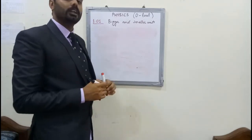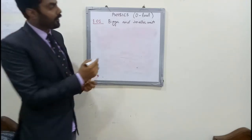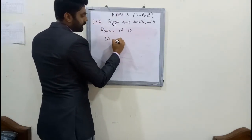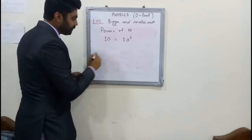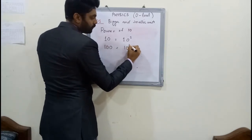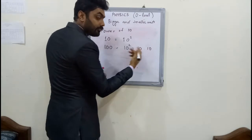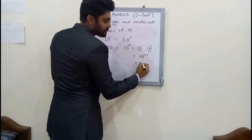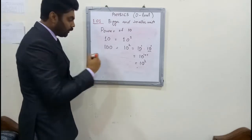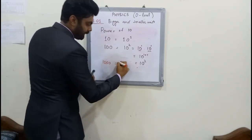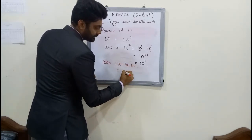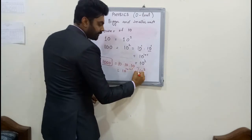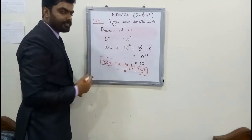Before going further to bigger and smaller units, you have to know what is the power of 10. If I write simply 10, its power is equal to 1. If it is written 100, its power is 2, because 10 is multiplied by 10 — when the bases are the same, the powers are added, giving 10 to the power 2. And 1000 is 10 multiplied by 10 multiplied by 10, which is 10 power 3.